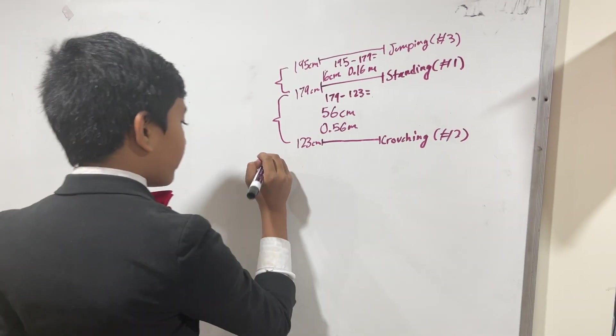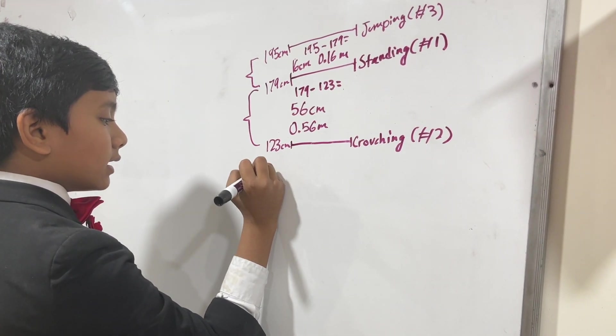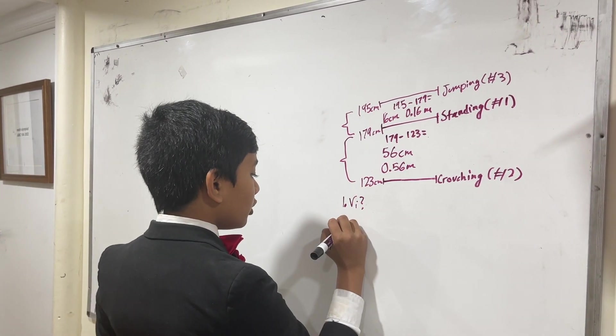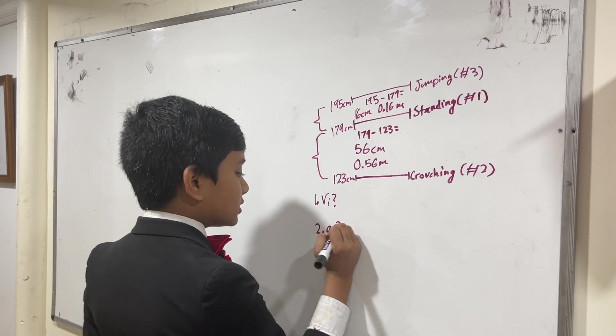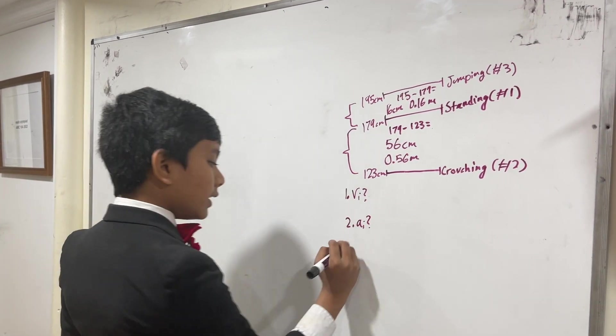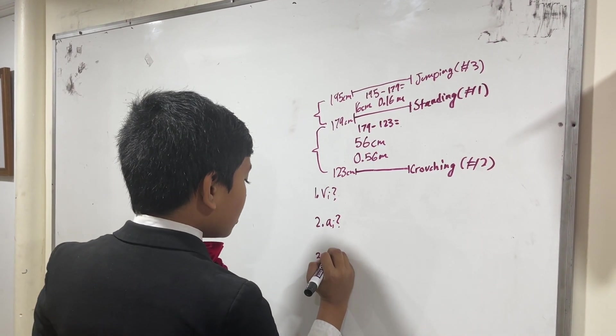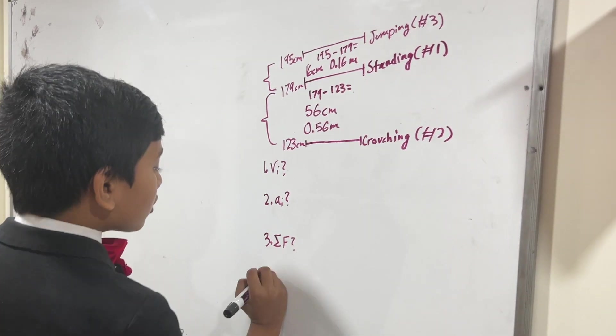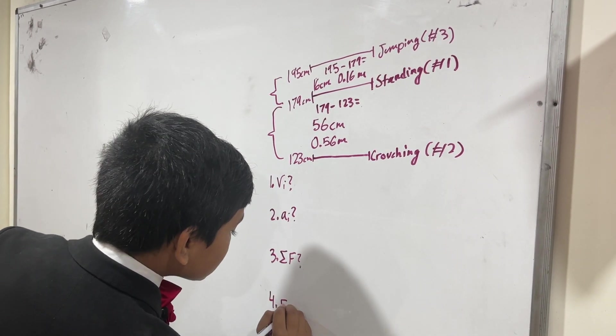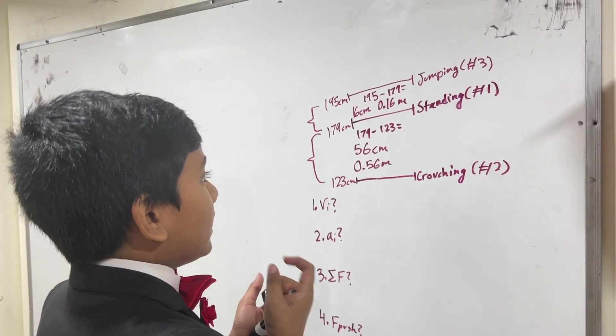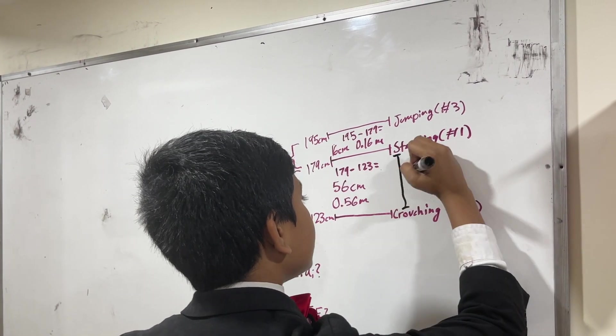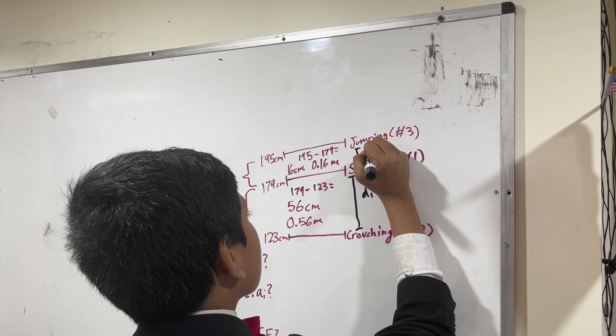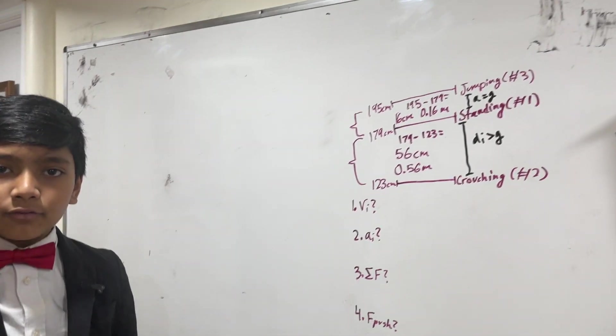How will we approach this problem? We have four problems. Number one, what is the initial velocity that we have just before our feet leave the ground? Number two, what is our initial acceleration just before our feet leave the ground? Number three, what is the net force as we leave the ground? And four, what is our pushing force that gets us off the ground? One of the things to note is that to get off the ground, your acceleration, your initial acceleration, must be greater than zero. But after jumping, your acceleration is equal to zero. In other words, you're at freefall.